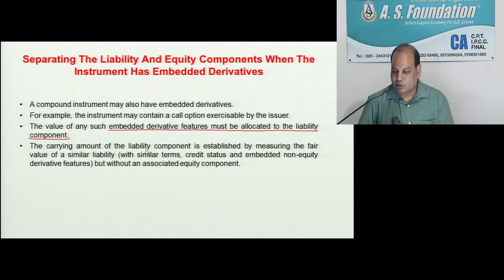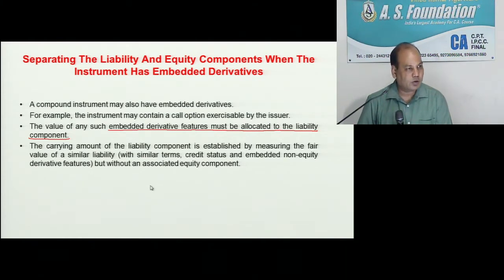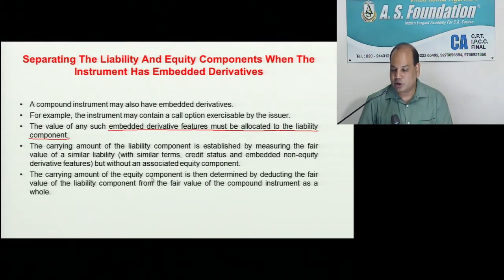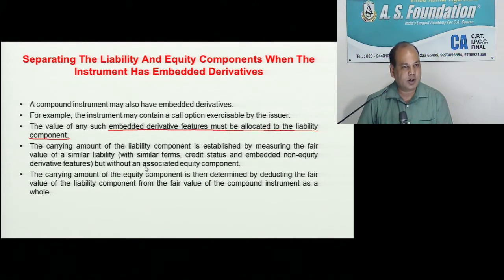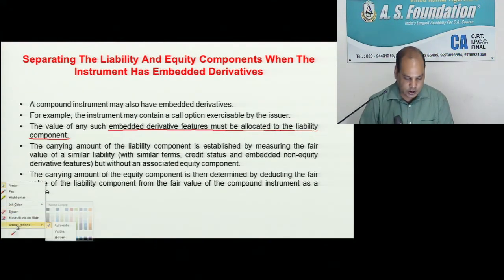The carrying amount of the liability component is established by measuring the fair value of a similar liability with similar terms, credit status, and embedded non-equity derivative features, but without any associated equity component. You compute first the fair value of the liability — like you have done in about 20 questions using present value of cash flows. The carrying amount of the equity component is then determined by deducting the fair value of the liability component from the fair value of the compound instrument as a whole.